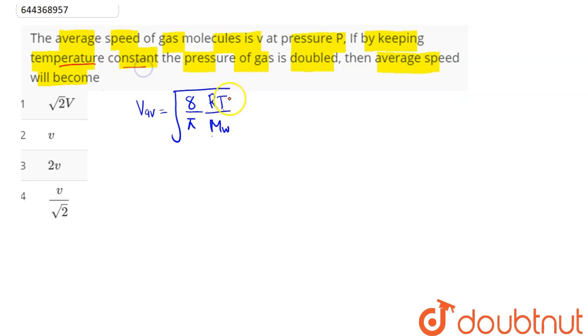remains constant. For a gas, molecular weight remains constant, R remains constant, and temperature remains constant. This means the average velocity will remain constant. Hence, if initial average velocity is v, then final average velocity will also be v, which is option 2.